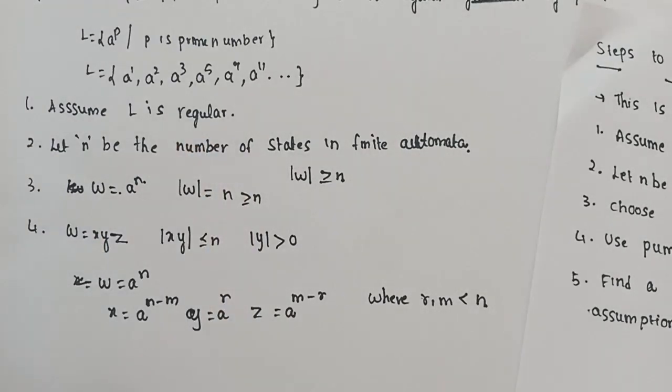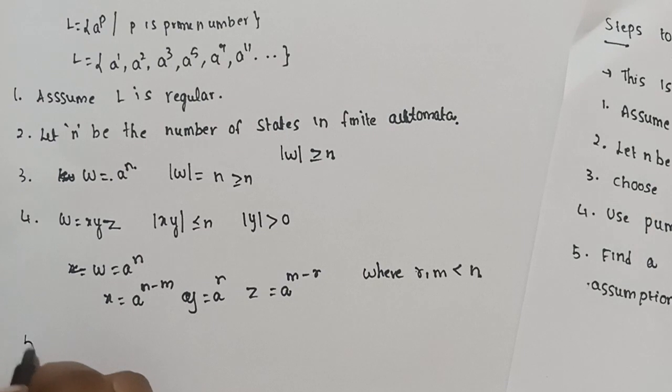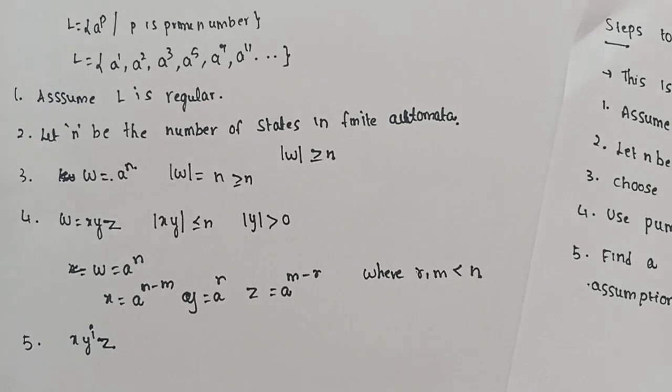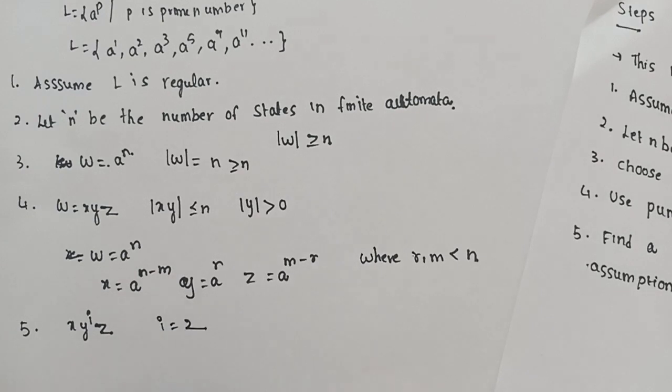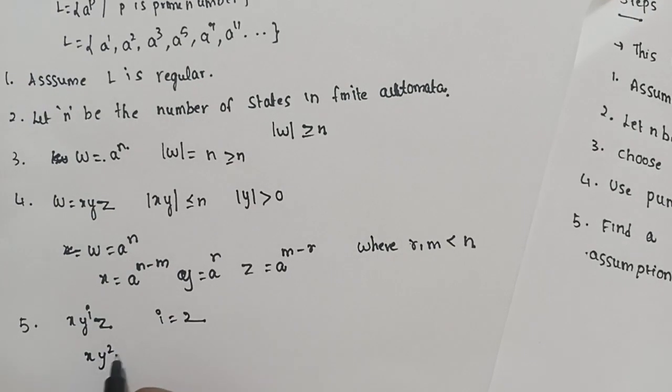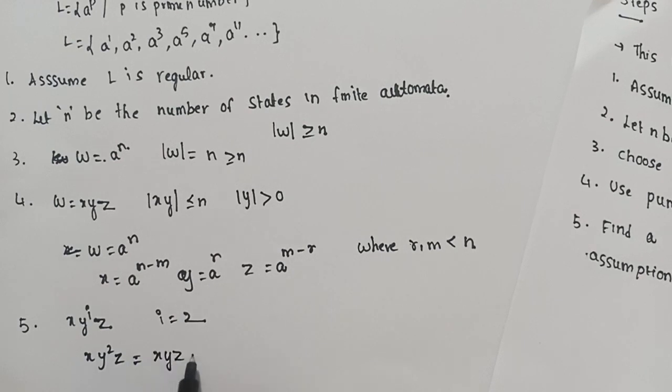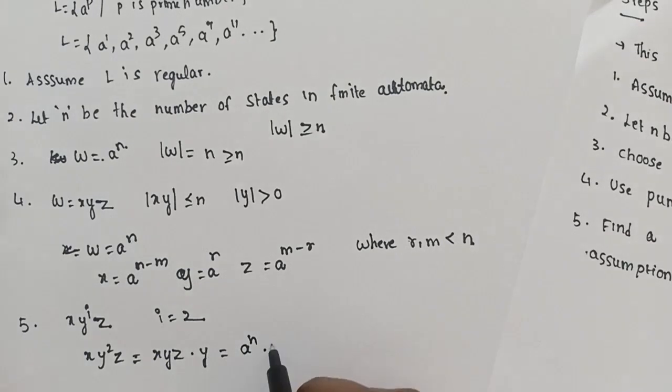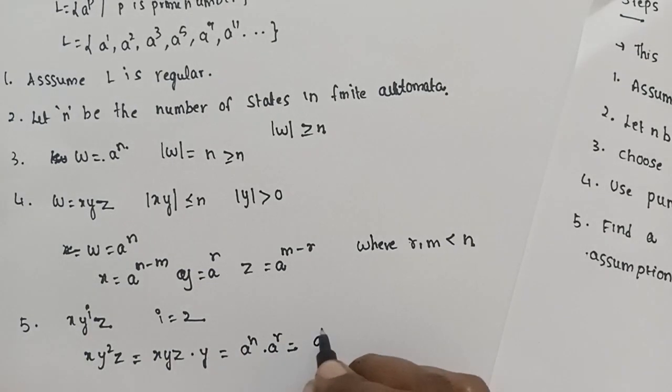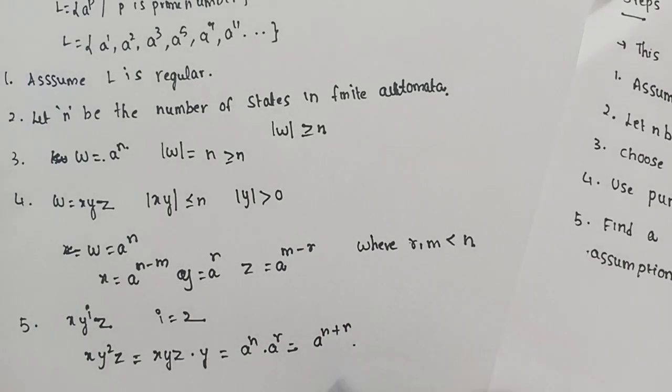Now we can pump this. Since it is supposed to be a regular language, xy^i z should belong to the language for all i greater than or equal to 0. Let's take i equal to 2. So xy^2 z equals x times y times y times z, which is a^n times a^r, which equals a^(n+r).